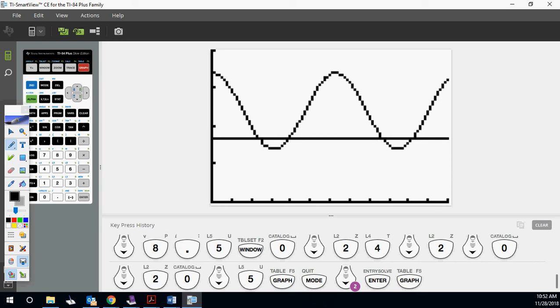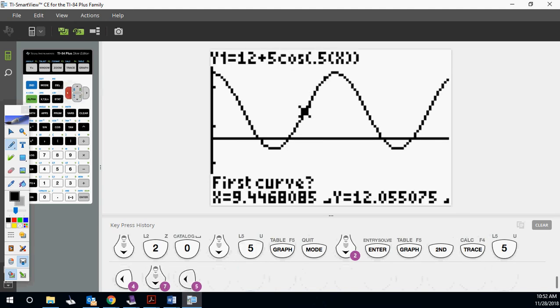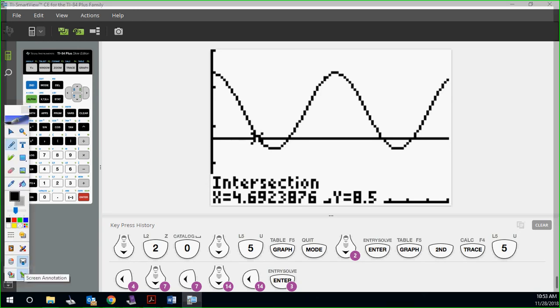How do you know which one? Well, once it says here, midnight, by what time the nearest minute must it leave to prevent grounding? So it's going to be grounded this hole under here. So we want to leave before that first intersection point. So we want to hit your second trace, intersect. We're going to arrow over close to that first intersection spot. Hit enter, hit enter, and hit enter. 4.692386 is the time in which it's going to need to leave by.